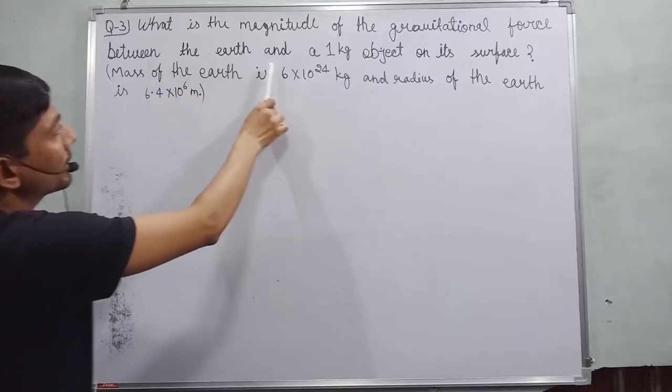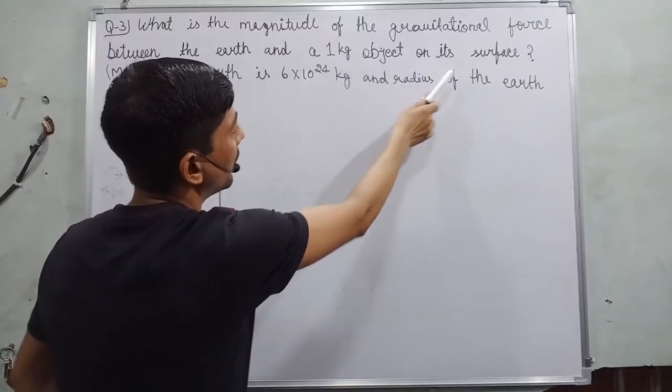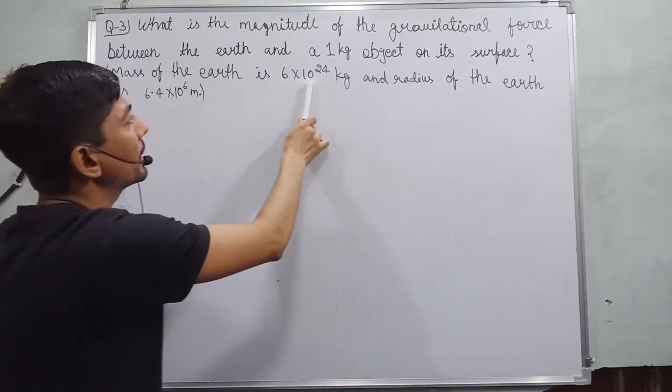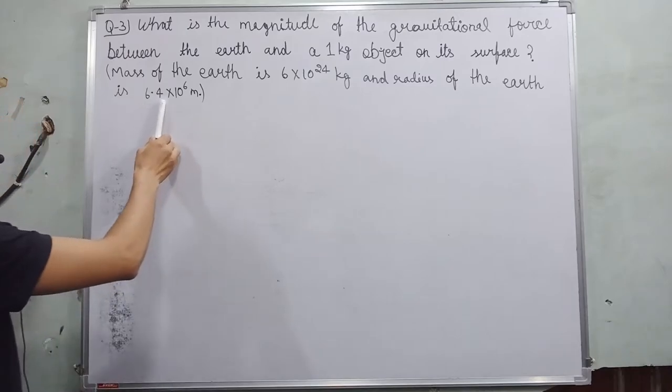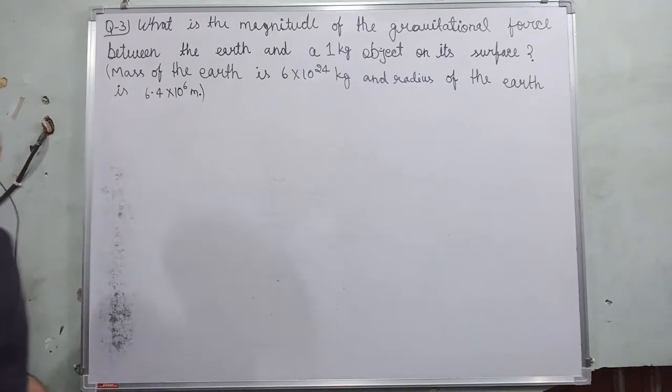What is the magnitude of the gravitational force between the earth and a 1 kg object on its surface? Mass of the earth is 6 × 10²⁴ kg and the radius of the earth is 6.4 × 10⁶ meter.